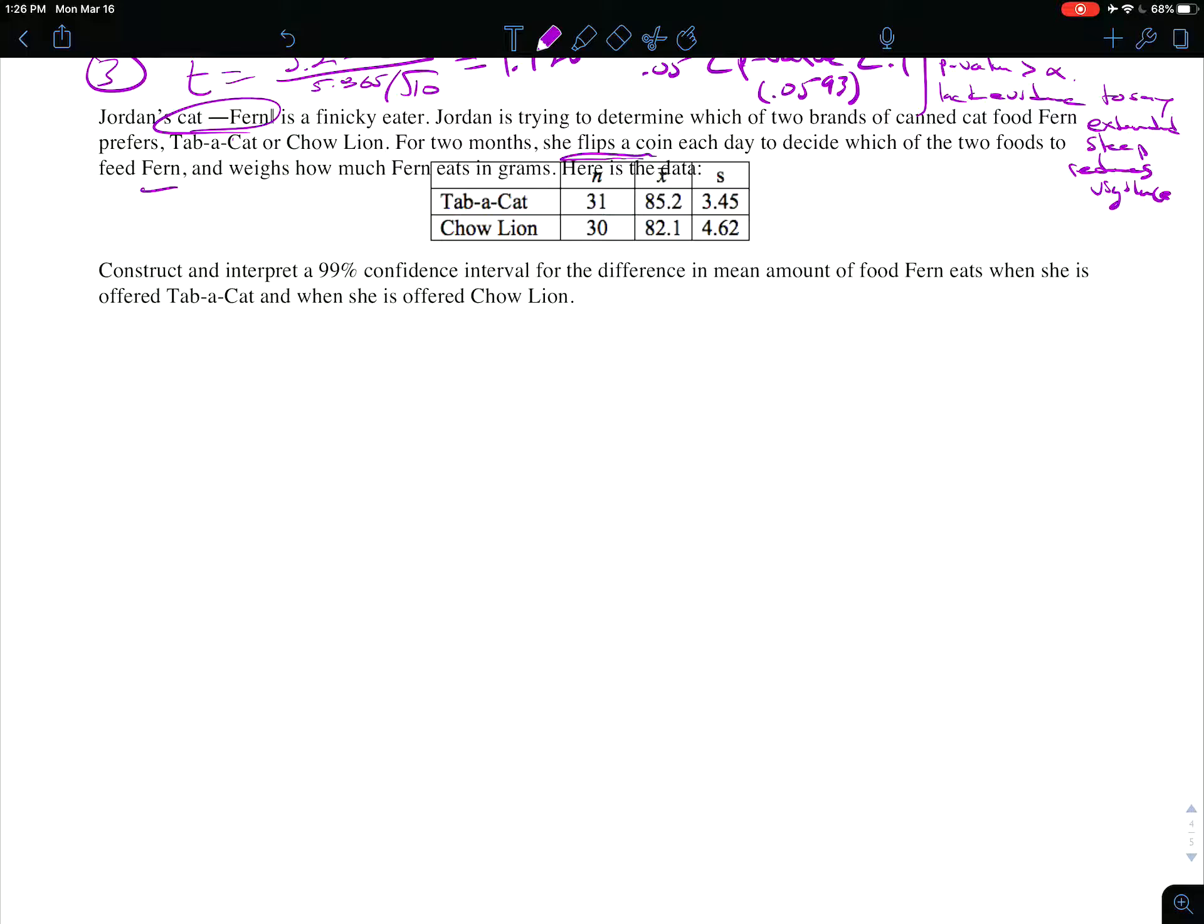So let's see, we're going to define mu_T equal to the mean amount of Tab eaten by Fern, and mu_C equals the mean amount of Chow eaten by Fern.